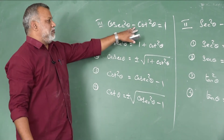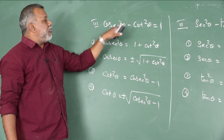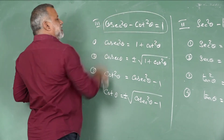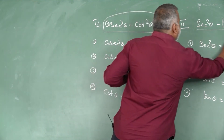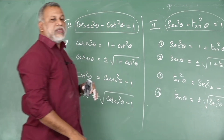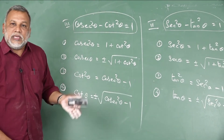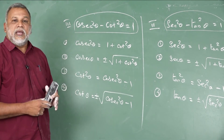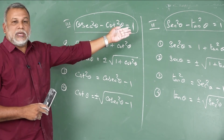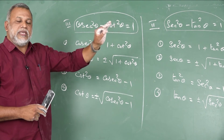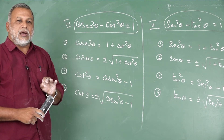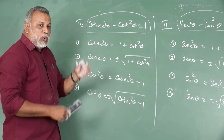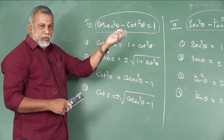So these are called identities. To recall: cosec²θ − cot²θ = 1, sec²θ − tan²θ = 1, and sin²θ + cos²θ = 1. These are the three fundamental trigonometric identities.